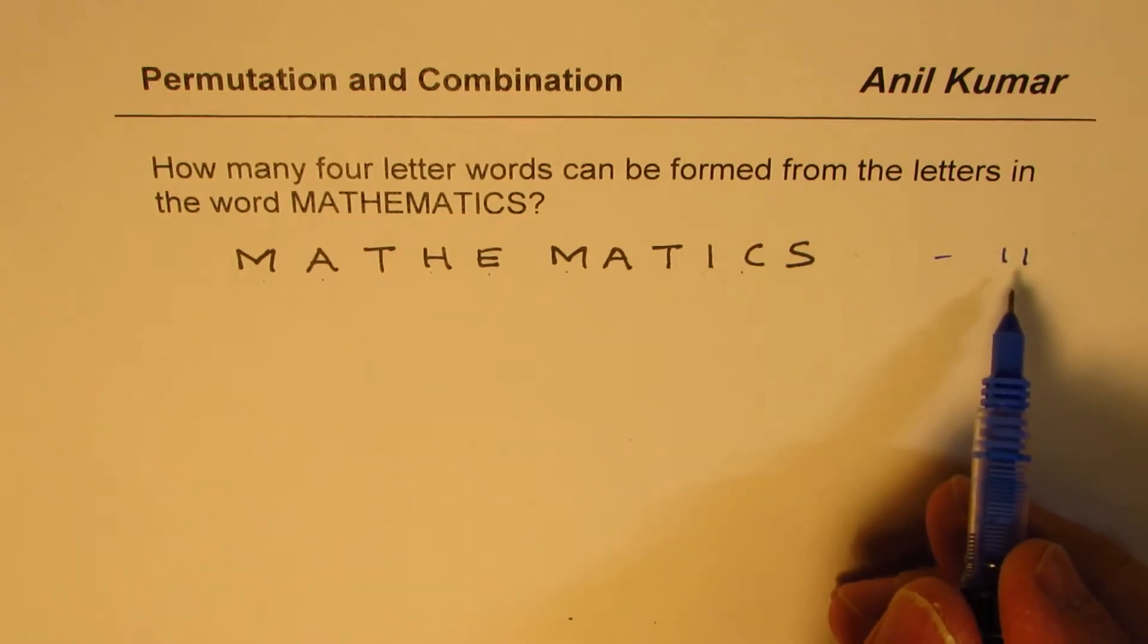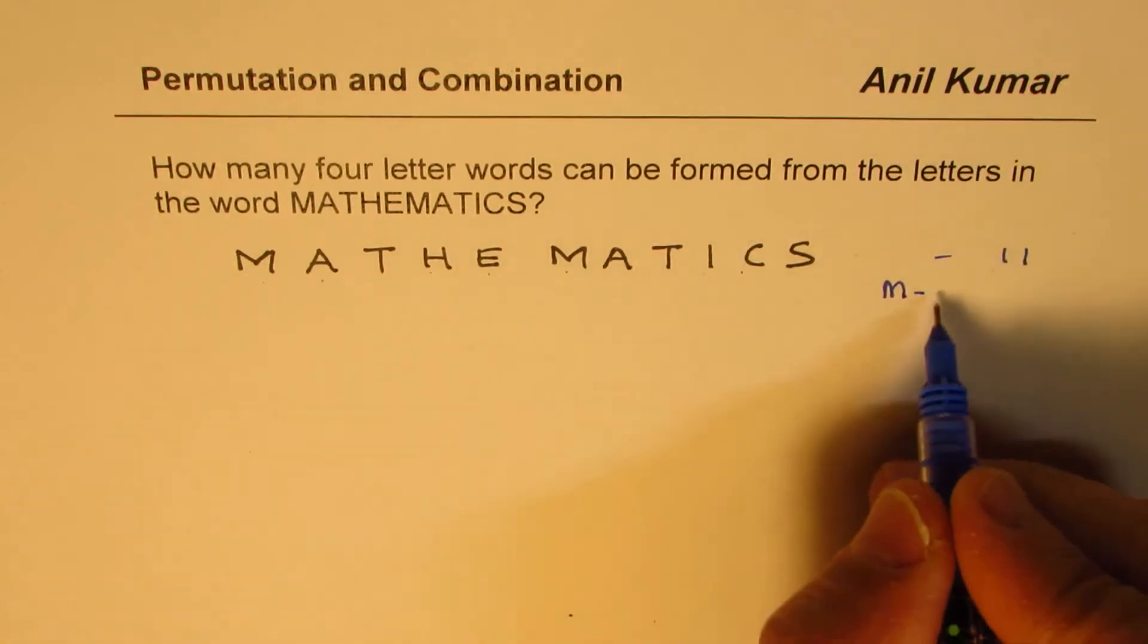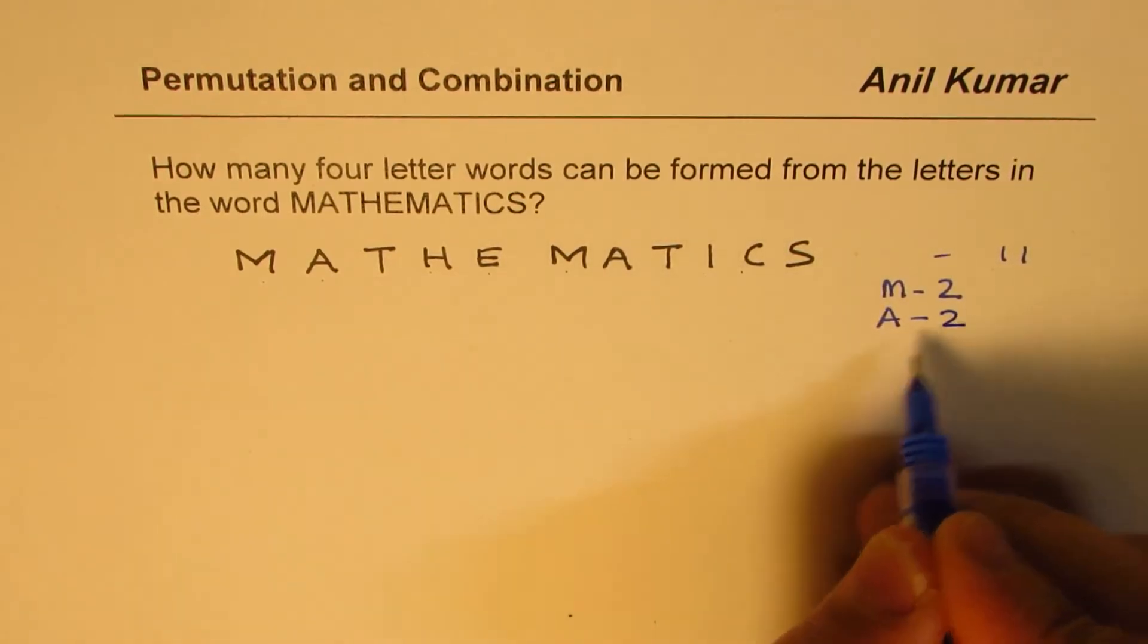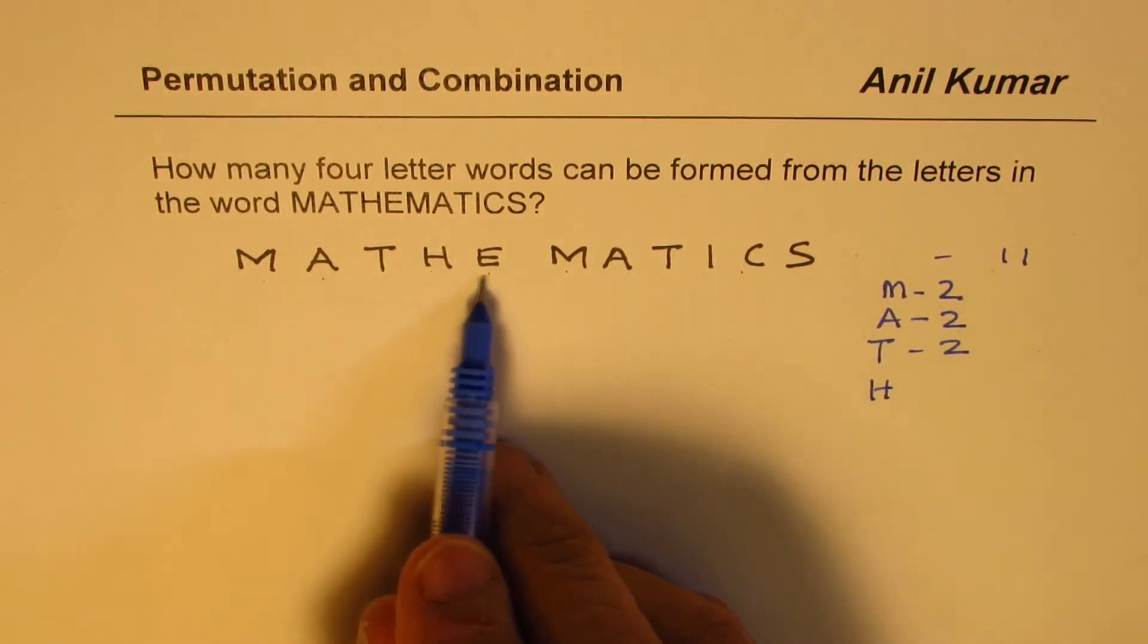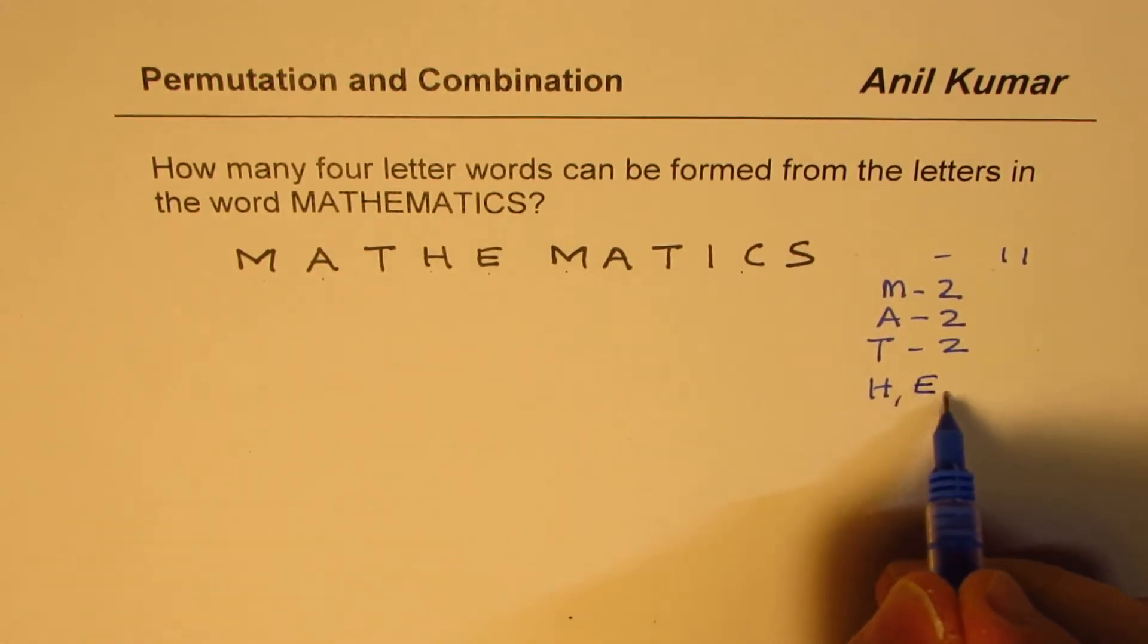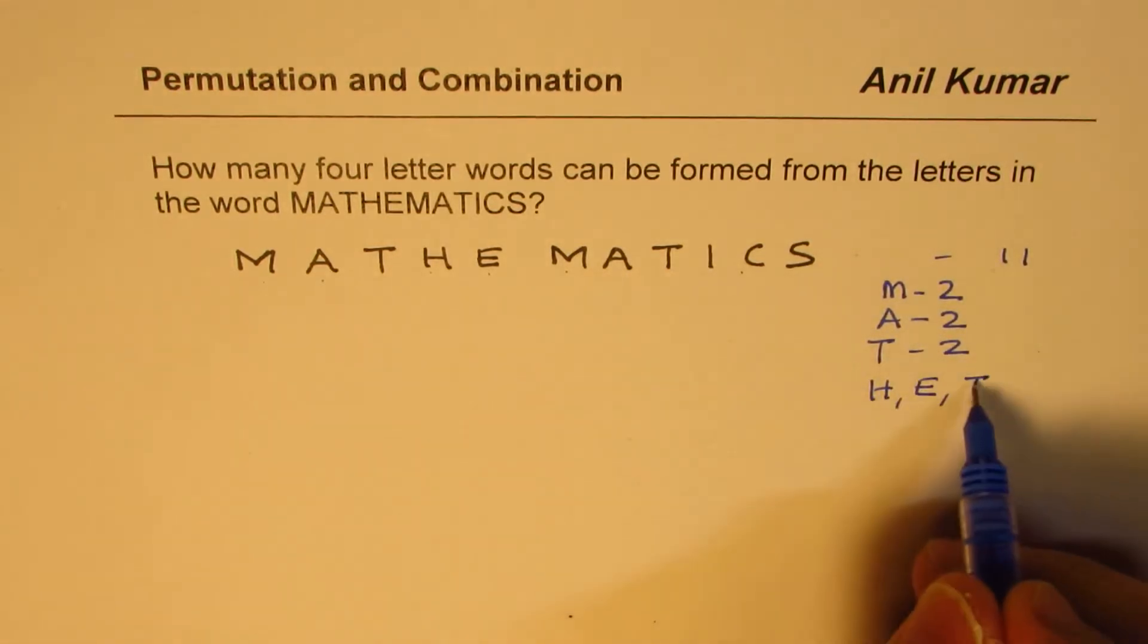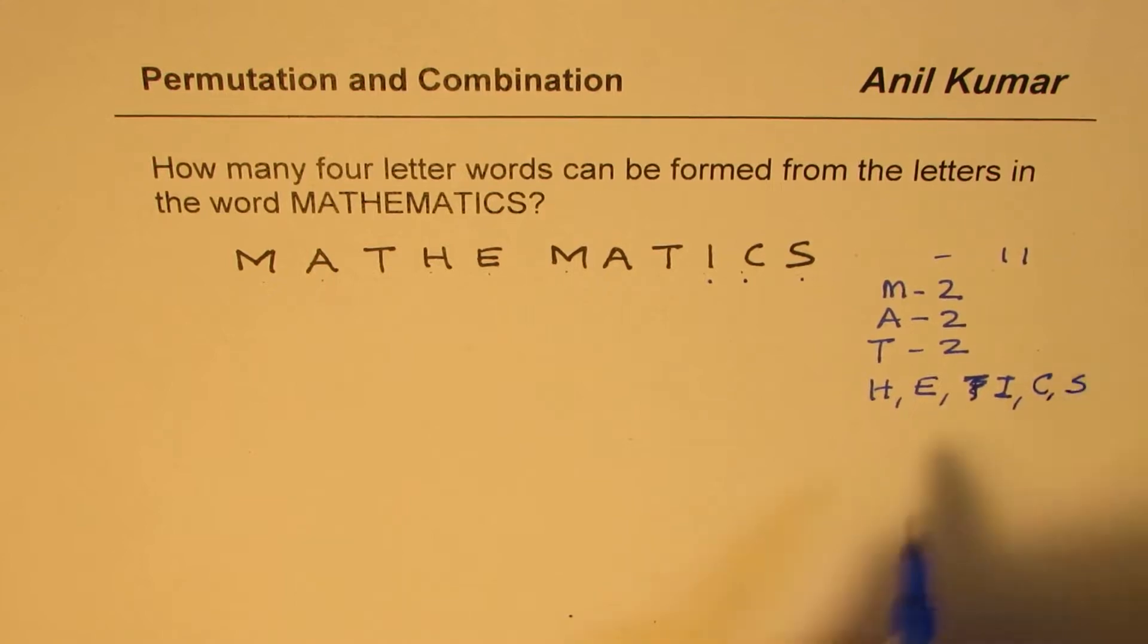How many of each kind? That is the second. M, how many M's do we have? We have two M's. A, how many A's? Two A's. T, how many T's? Two T's. H, so we have just one H and then we have one E. We have already counted M and A. So T, we have only, oh we have already taken T, right? So make it I. We have I, C and S.